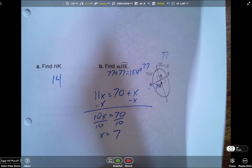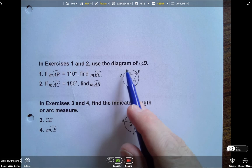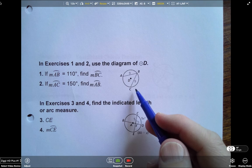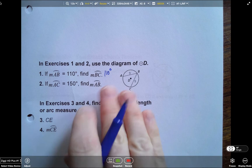Let's do another sample problem. So it says 1 and 2 use the diagram of circle D. So number 1, it says the measure of arc AB is 110 degrees. What's the measure of arc BC? Well, notice segment AB is congruent to segment BC because they're both 9. So that means that the measure of arc AB has to be the same as the measure of arc BC. So it's 110 degrees.